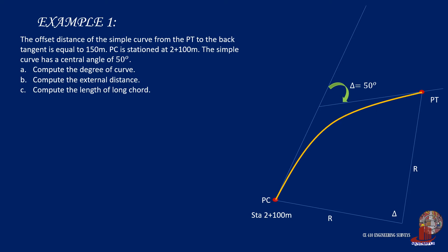The given distance of 150 meters is a perpendicular offset from PT to the extended back tangent. For the first requirement, which is the degree of the curve, the formula we have is R equals 1145.916 divided by the degree of the curve, which means we need to identify the radius of curvature.